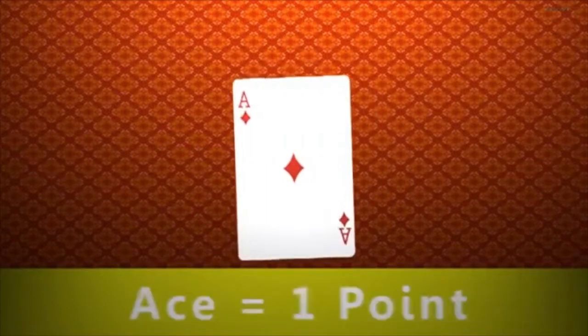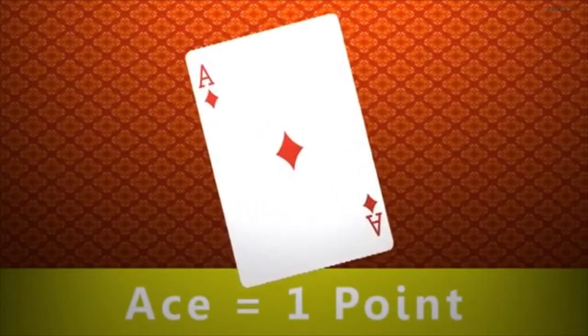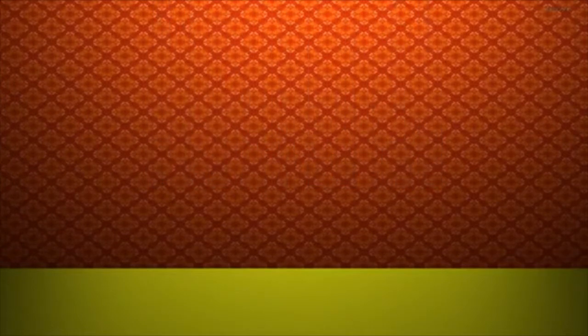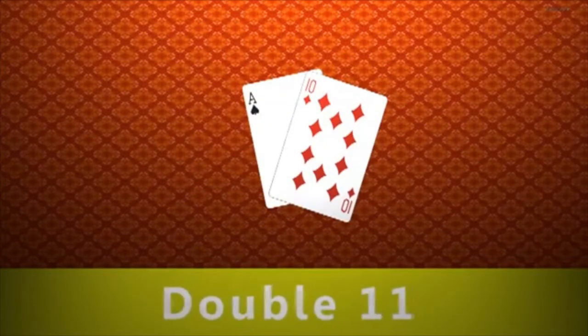In a hard hand, an ace is counted as one point. Here's some strategies for hard hands. Always double an 11, unless you're against an ace.